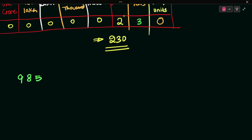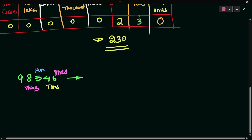Let's look at the number 9, 8, 5, 4, 6. Starting from the right side: the ones place is 6, the tens place is 4, the hundreds place is 5, the thousands place is 8, and the ten-thousands place is 9.